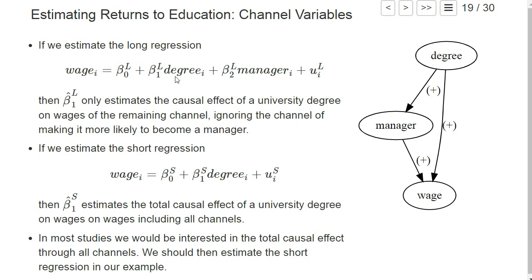If we estimate the long regression where we regress wage on degree and manager, we basically control for this channel and our estimated coefficient beta_1^L only captures the direct effect from obtaining the university degree on the wage, not the effect that goes through the channel that it's more likely to become a manager.